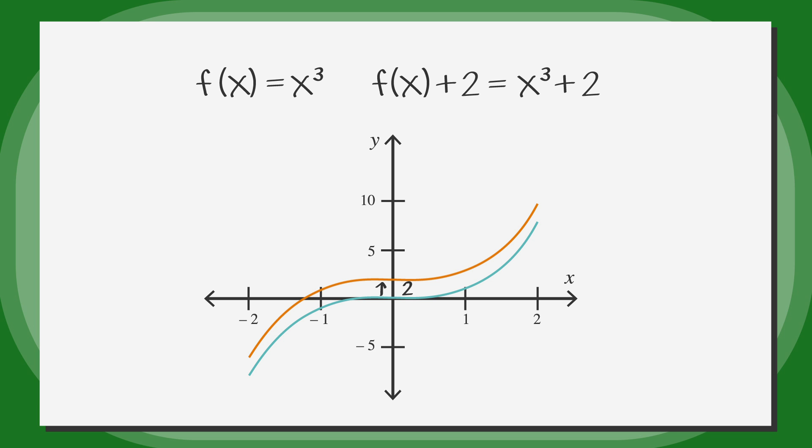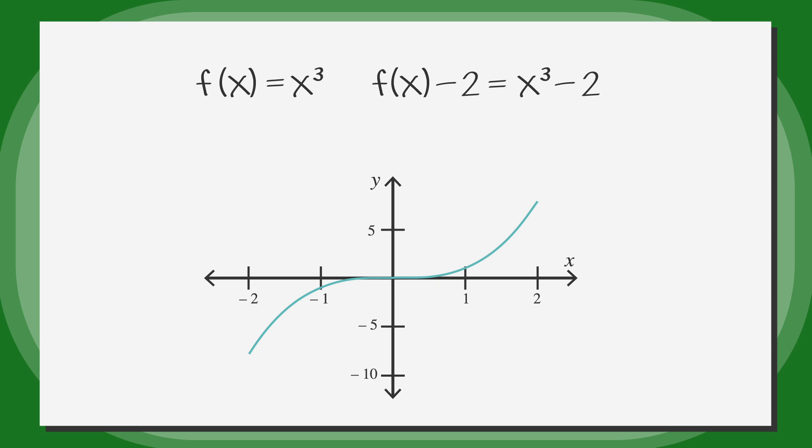Subtracting 2 from the function outside of the parentheses, we get the new function x cubed minus 2. The y values are then reduced by 2, resulting in shifting the function down by 2.